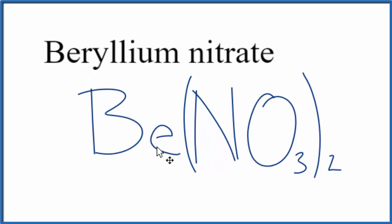So this is the formula for beryllium nitrate, Be(NO3)2. We have 2 nitrate ions and a beryllium atom here. This is Dr. B. Thank you very much.